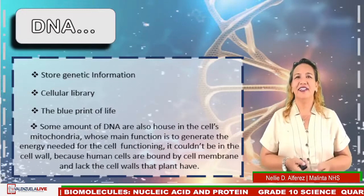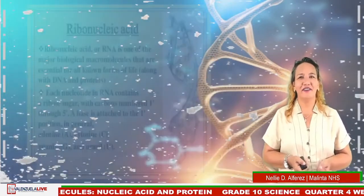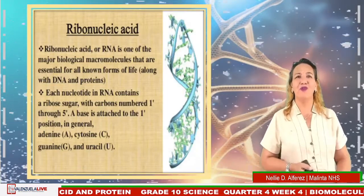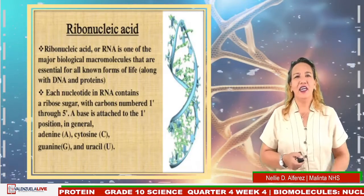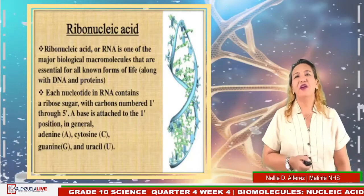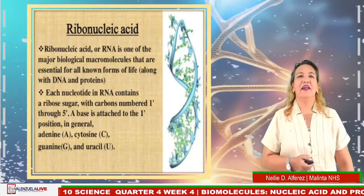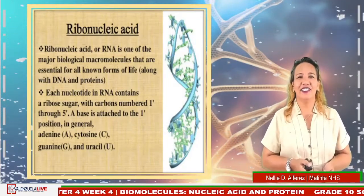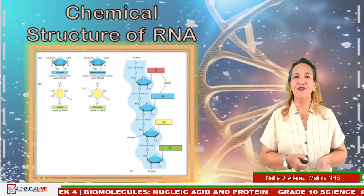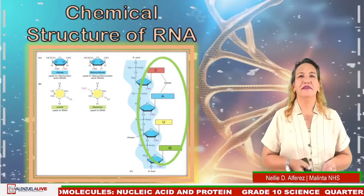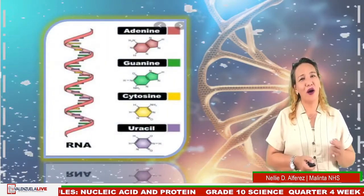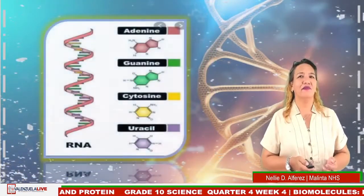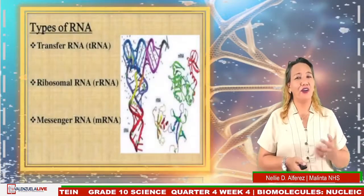Now let us talk about RNA. Ribonucleic acid or RNA is one of the major biological macromolecules essential for all known forms of life, along with DNA and protein. Each nucleotide in RNA contains a ribose sugar with carbons numbered one through five. A base is attached at the number one position — in general, adenine, cytosine, guanine, and uracil. RNA is generally a single strand. There are three types of RNA.